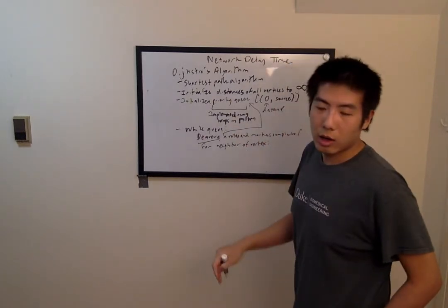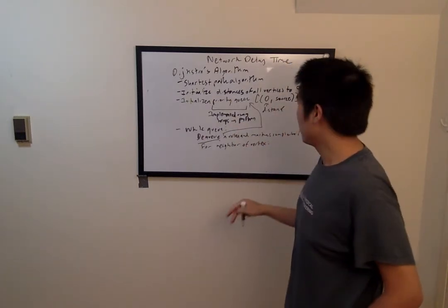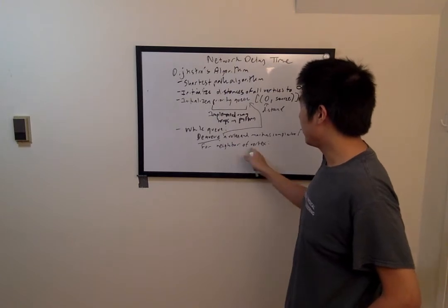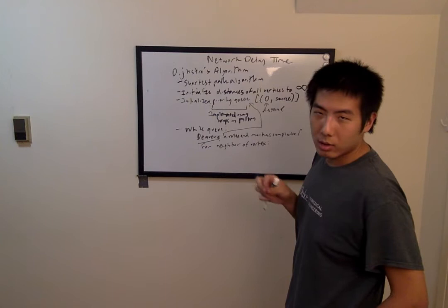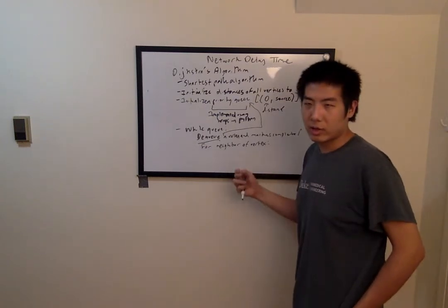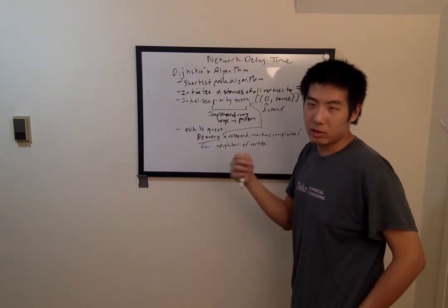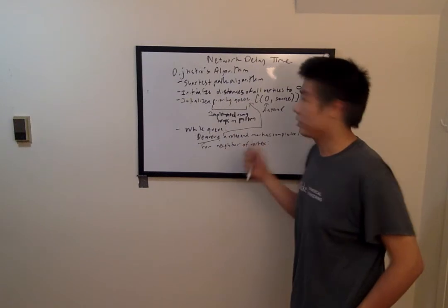we'll update the distances of the neighbors of the vertex that we just dequeued if there is a path from the current vertex to the neighbor vertex that is lower than the current distance marked at that vertex.